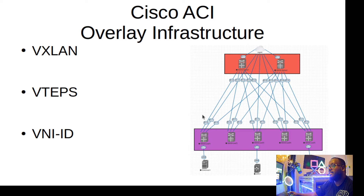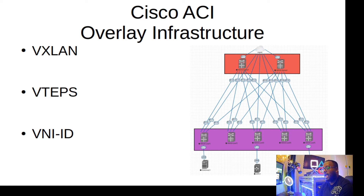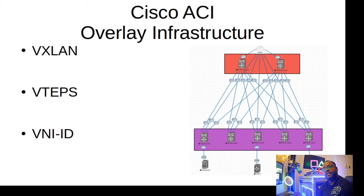VXLAN uses VTEPs — Virtual Tunnel Endpoints. Think of VTEPs as the termination points of your VNI tunnels. The VNIs are the tunnels and the VTEPs terminate each end of those tunnels. Between two VTEPs you can have over 16 million VNI tunnels. The VNI IDs are the actual tunnels that VTEPs attach onto — you will have two VTEPs with a tunnel running between them.